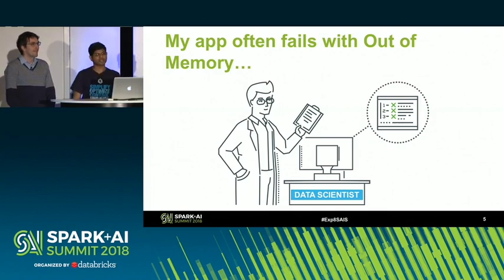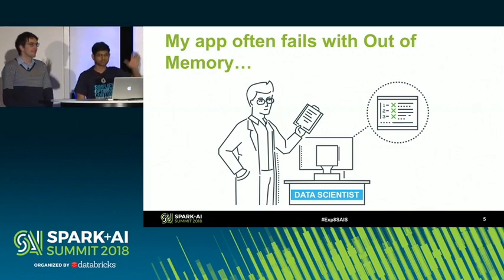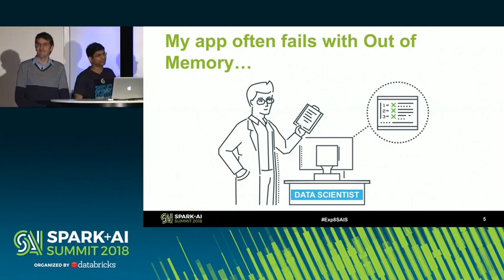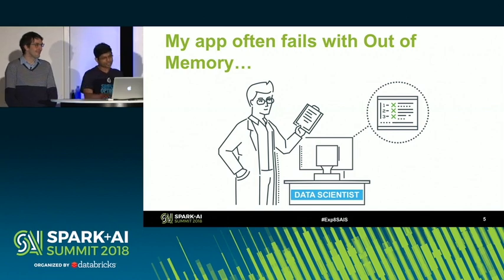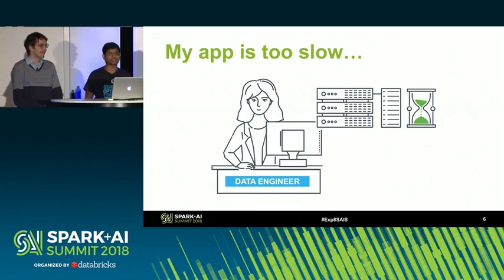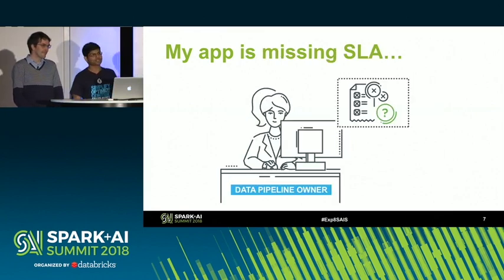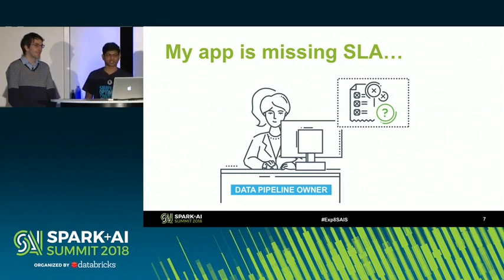How many of you here have run a Spark app and it just failed out of memory? Quick show of hands. It's a very common problem. Or once you make the application production-ready, the app is just taking a long time to run — it's too slow, not meeting performance requirements. Or maybe you have strict performance requirements, especially with streaming and real-time applications. They have strict SLAs, and the app is missing them.